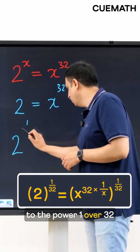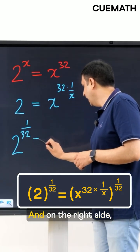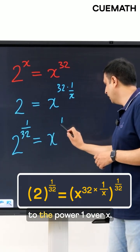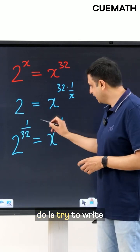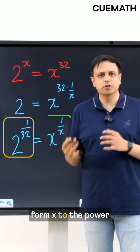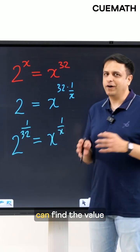That'll give you 2 to the power 1 over 32 on the left side and on the right side you will have x to the power 1 over x. And now what we'll do is try to write this term in the form x to the power 1 by x so that we can find the value of x.